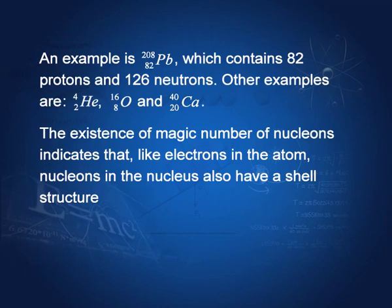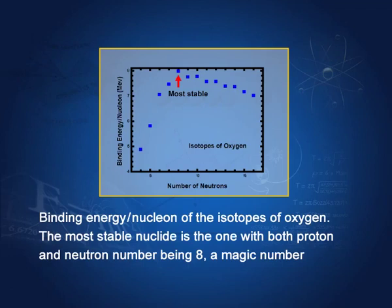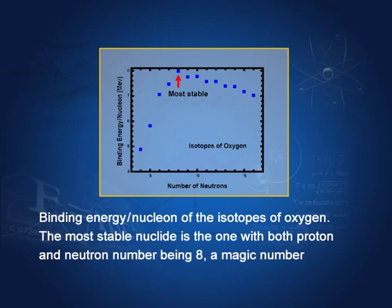Since both the number of protons and neutrons in Pb-208 are magic numbers, it is a very stable nucleus. Another example is oxygen-16: it has 8 neutrons and 8 protons, and 8 is a magic number. Therefore, this isotope of oxygen — with atomic number 8 and mass number 16 — is the most stable of all oxygen isotopes. This is the magic of magic numbers: when both proton and neutron counts are magic numbers, the nuclide is particularly stable.